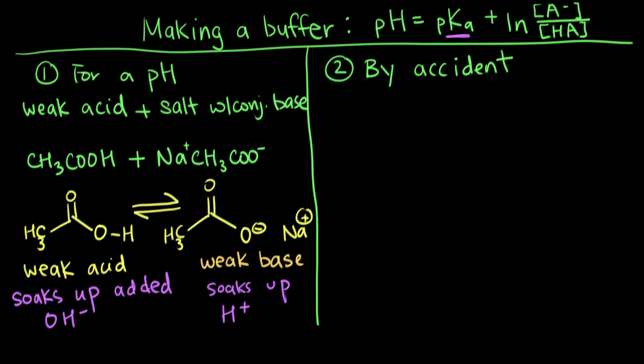The second situation where you might get a buffer, and this one is also really common in chemistry, is by accident. So what this means is you've made a buffer because you combined a weak acid with a strong base, or another way you can make a buffer is you combine a weak base with a strong acid.